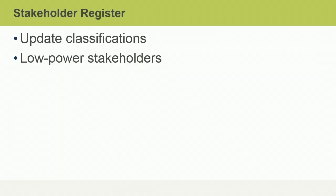One important thing to remember about stakeholder classification is that it will need to be updated regularly. Although stakeholders with low power usually have little influence in the way a project is managed or on its objectives, they can often achieve power by gathering support. They may try to leverage relationships with other stakeholders who do have power, or they may request support from organizations such as special interest groups, unions, professional associations, or government departments.